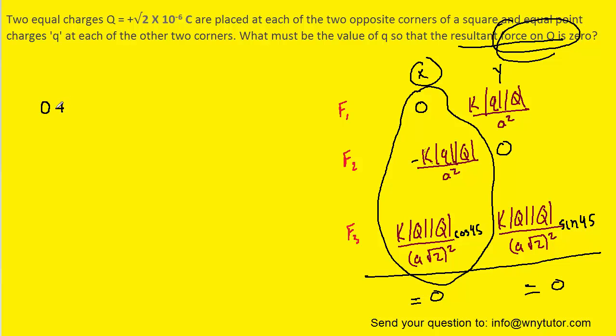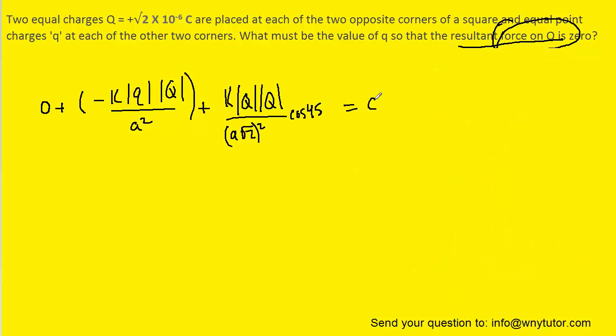We'll add it to the next component, the next X component, which was negative K times Q times uppercase Q divided by A squared. And then we'll add that to the third X component. And then we'll set that equal to zero.